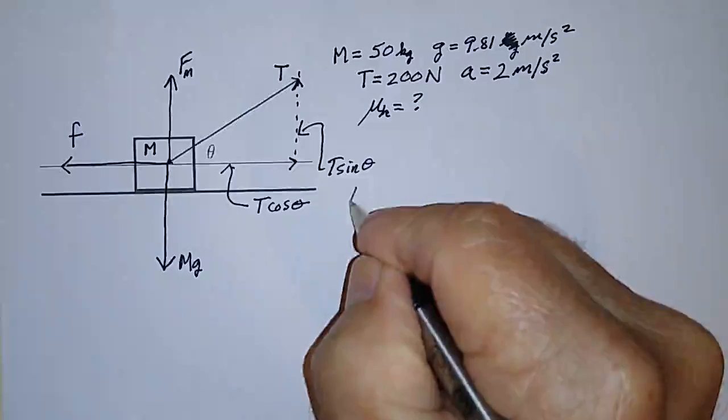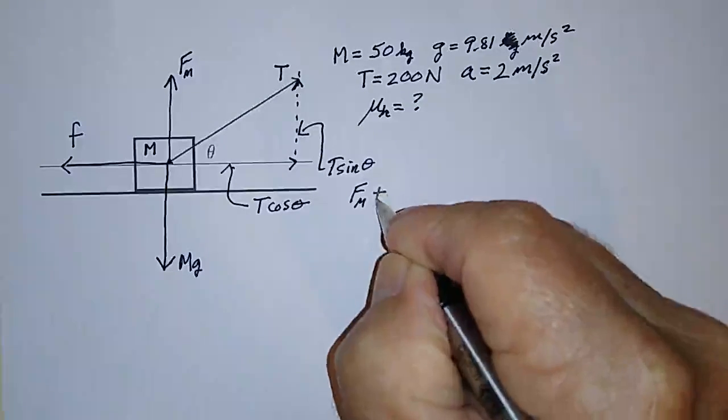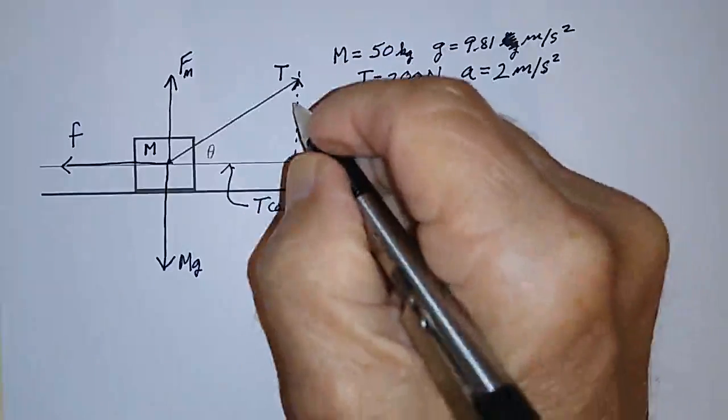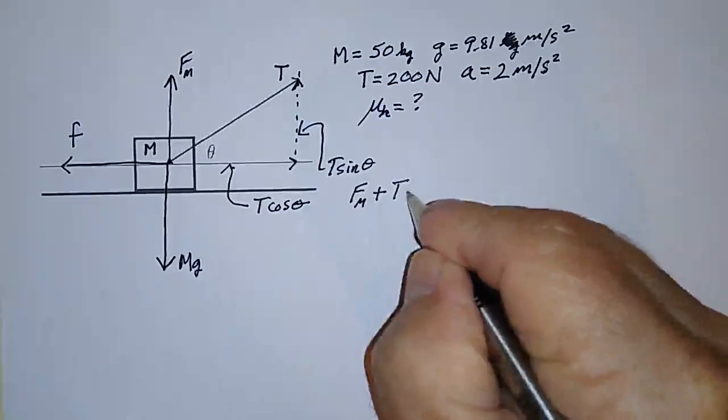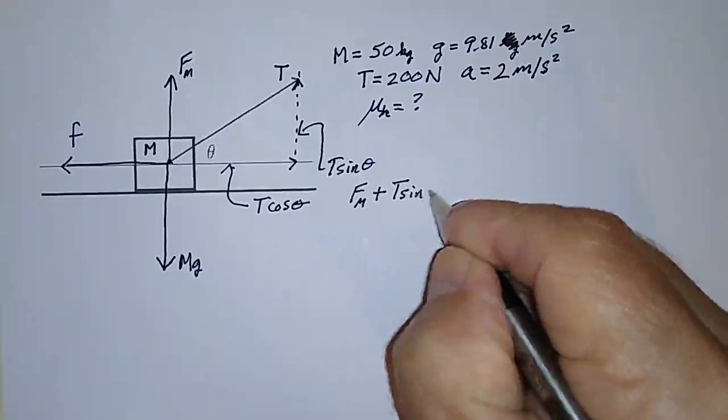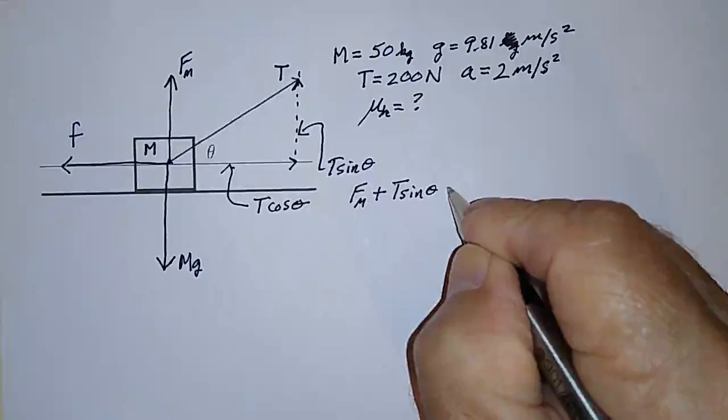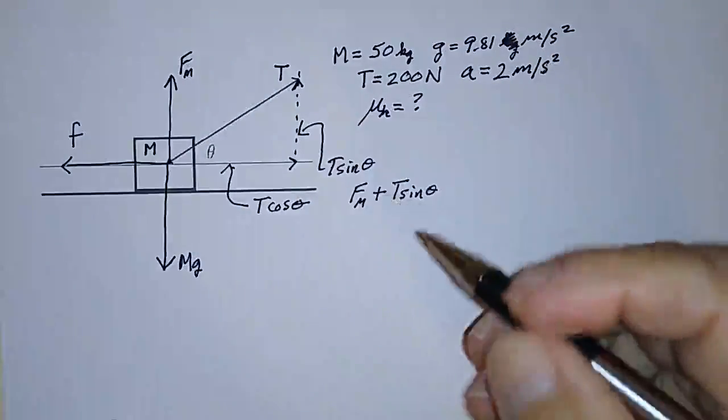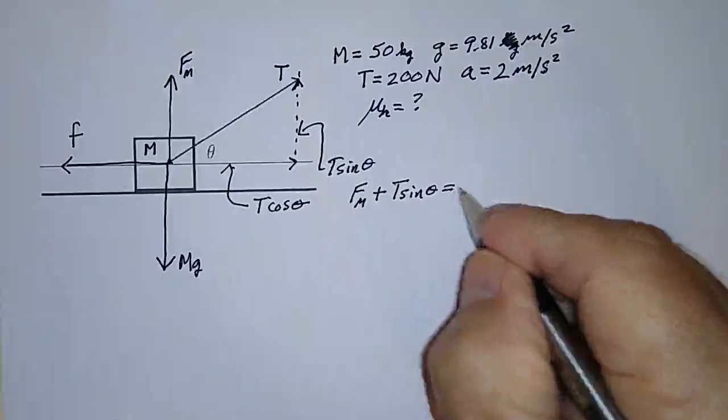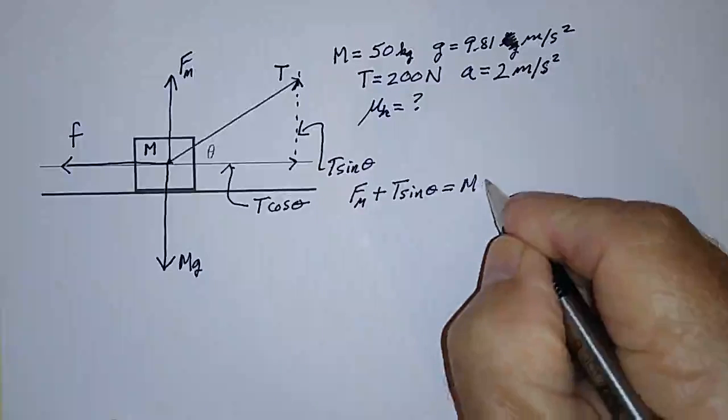So that's the normal force plus the force due to the vertical component of the tension which is equal to T times sine theta. And since it's not accelerating in this direction, this has to be equal to the weight Mg.